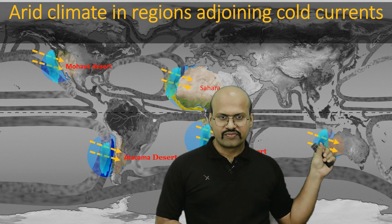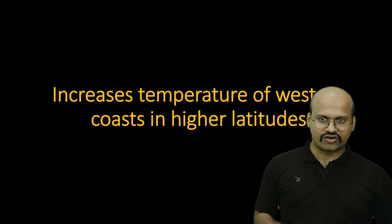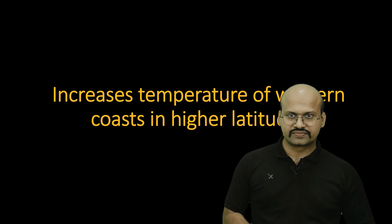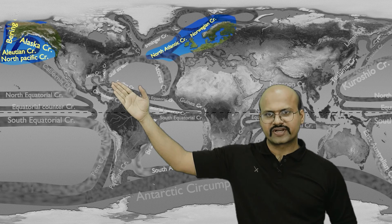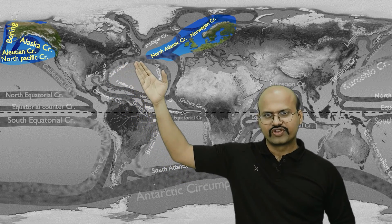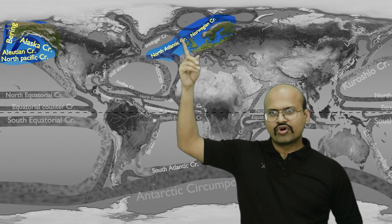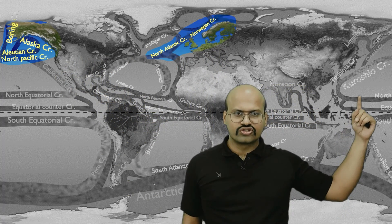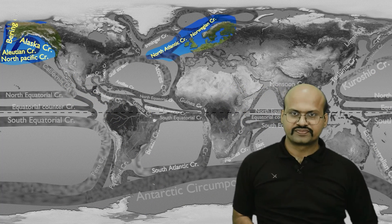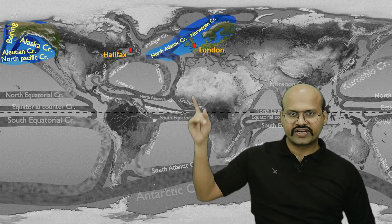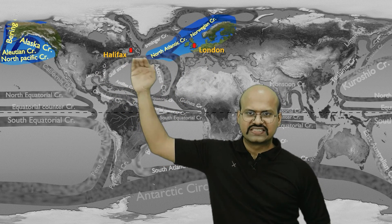Ocean currents also increase the temperature of the western margins of continents in higher latitudes. The North Atlantic Current is an extension of the Gulf Stream, which brings warm equatorial water that is further carried to the polar regions by the North Atlantic Current and Norwegian Current. In the Pacific, the Kuroshio Current brings equatorial warm water northward, which continues as the Aleutian Current and Alaskan Current. Comparing two cities — London in England and Halifax in Canada — both are at almost the same latitude.